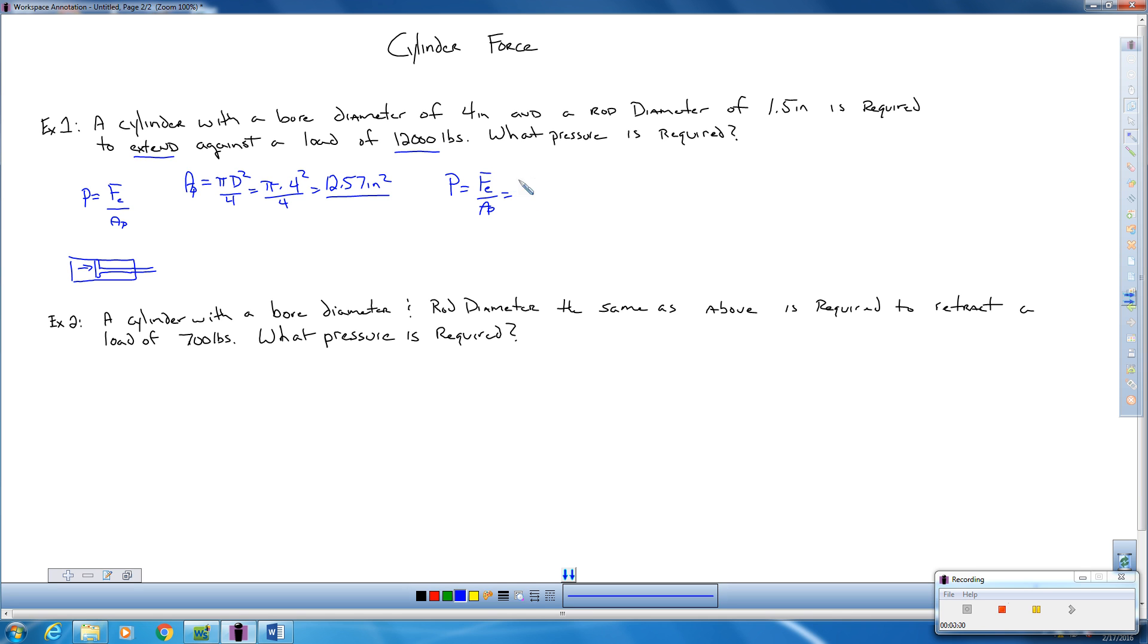Which in this case is 12,000 pounds divided by our area, 12.57 inches squared. And when you calculate that out, you roughly get 955, and that's pounds per square inch, so 955 psi.